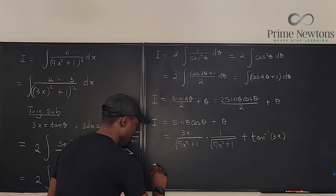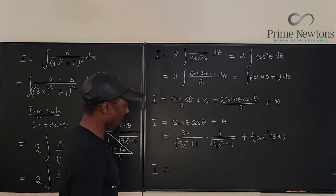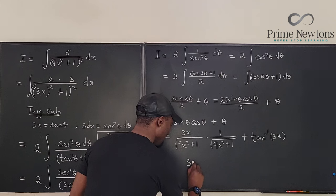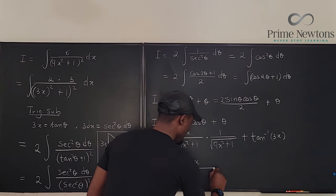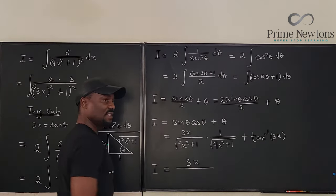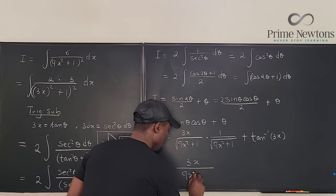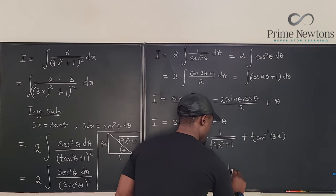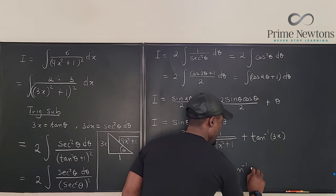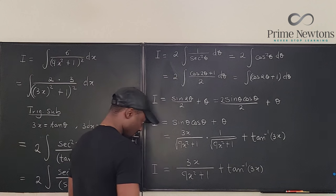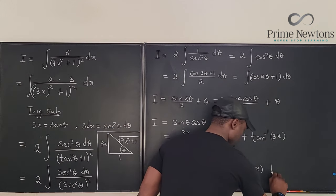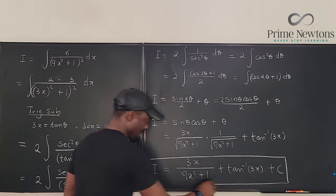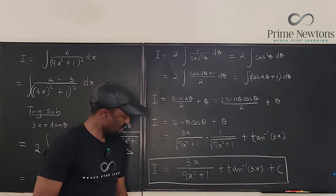So finally we got our answer. This times this is just 3x. This times this will remove the square root sign so you have 9x squared plus 1 plus arc tan of 3x. This is our answer.